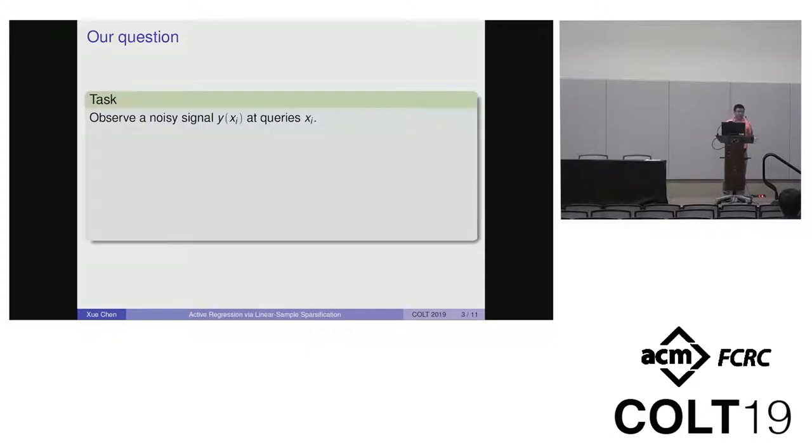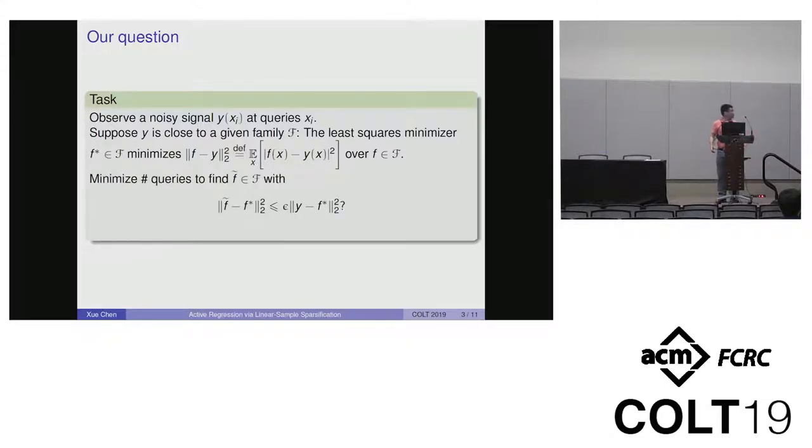Given a noisy signal Y as our observation, every time we can query an arbitrary point x in the domain. We assume Y is close to a given family, such as low-degree polynomials or sparse Fourier transforms. Let F star be the least squares minimizer in this family, which minimizes the distance to Y, defined as the expected L2 norm over all signals in this family.